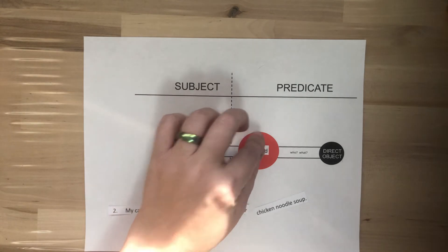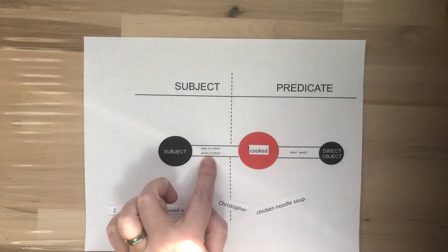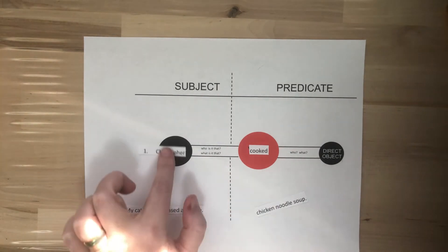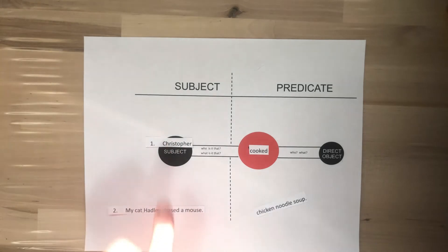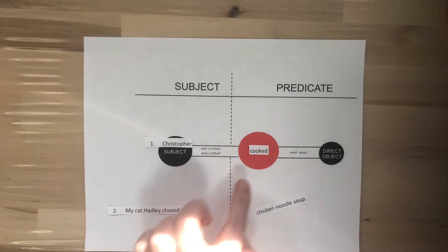There we go. So, he cooked. That we know. Now, we want to know who is it or what is it that cooked? We know it is Christopher that. That makes Christopher our subject. He is who is it that cooked.